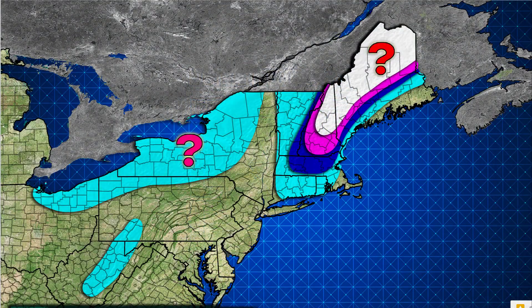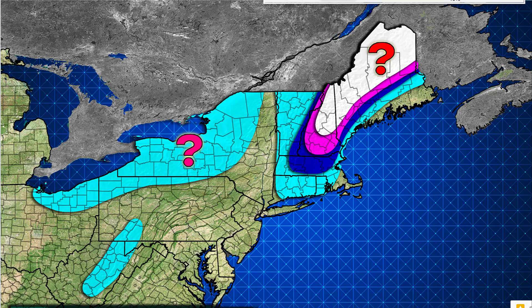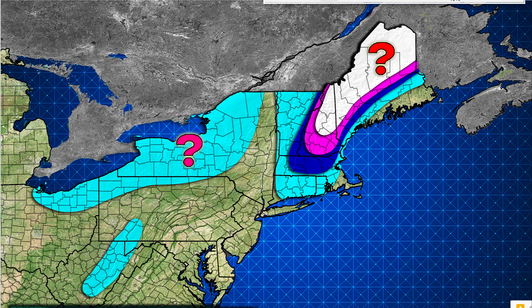Hey weather warriors, in this video I'm going to be giving you your official snowfall forecast for the nor'easter that's coming up the coast this weekend. Here's your December 4th forecast: track, timing, locations, snowfall amounts, and much more. Before we begin, I invite you to subscribe below if you like educational weather forecast breakdowns just like this, and comment below if you want me to make more accumulating snow maps.